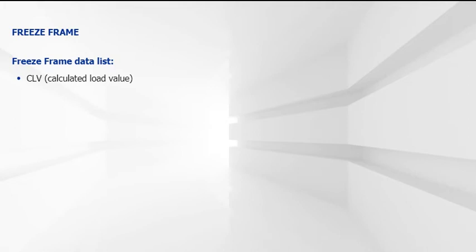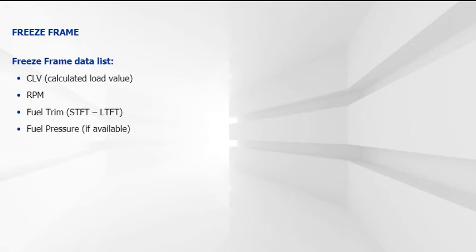Freeze frame data can be a source point for diagnostics. When a DTC is set and a freeze frame snapshot is taken by the PCM, you should be able to view the following information on the scan tool: calculated load value, throttle and fuel demand, engine RPM, short-term and long-term fuel trims, fuel pressure (if available), vehicle speed, engine coolant temperature, intake pressure (if available), closed or open-loop status, and diagnostic trouble code.